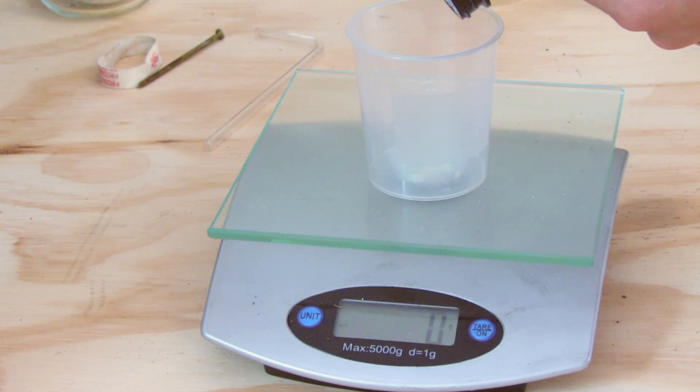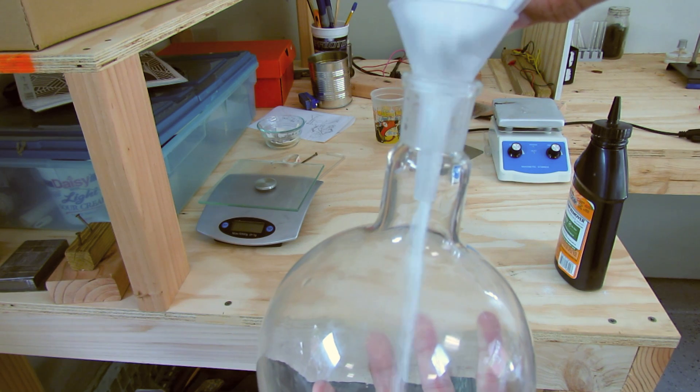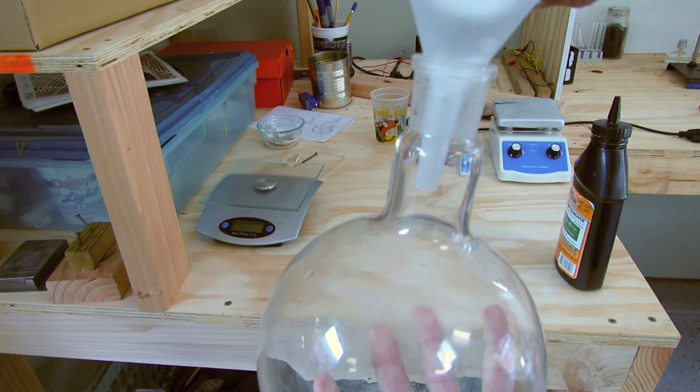First, measure out about 80 grams of potassium nitrate. Now add it to your boiling flask.